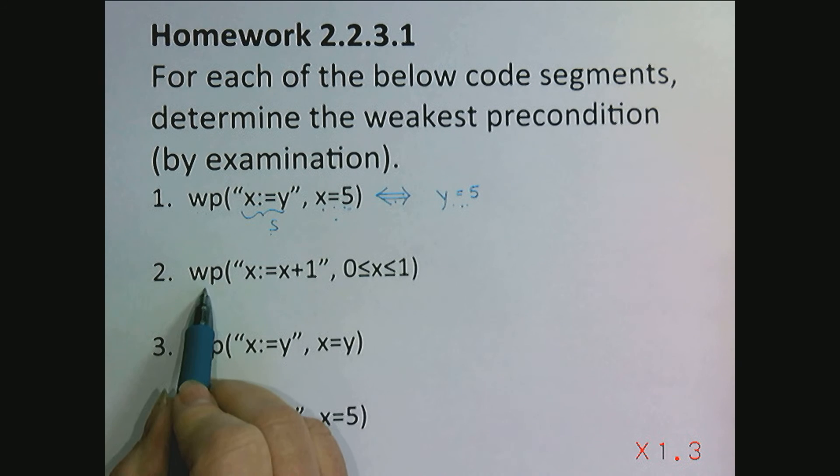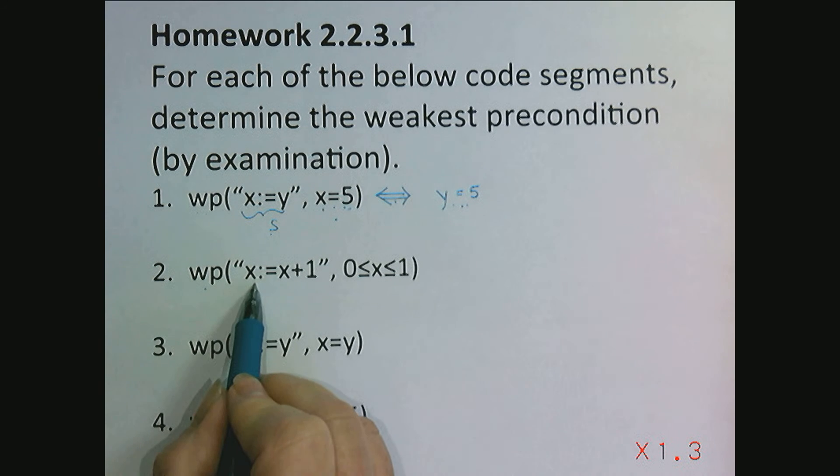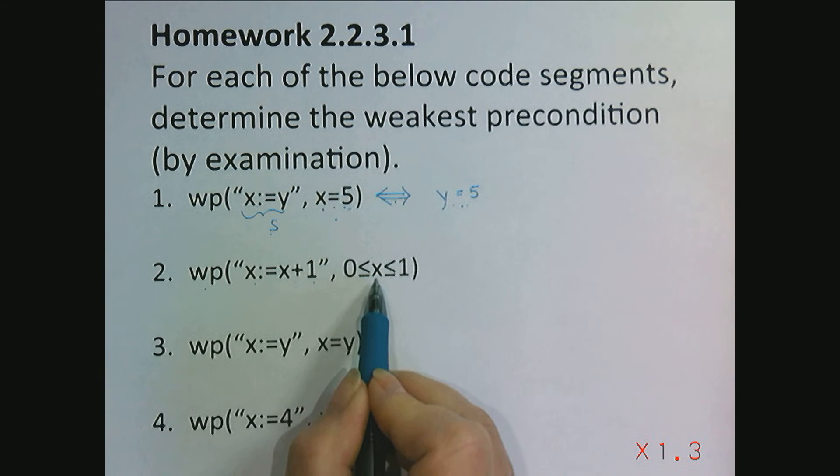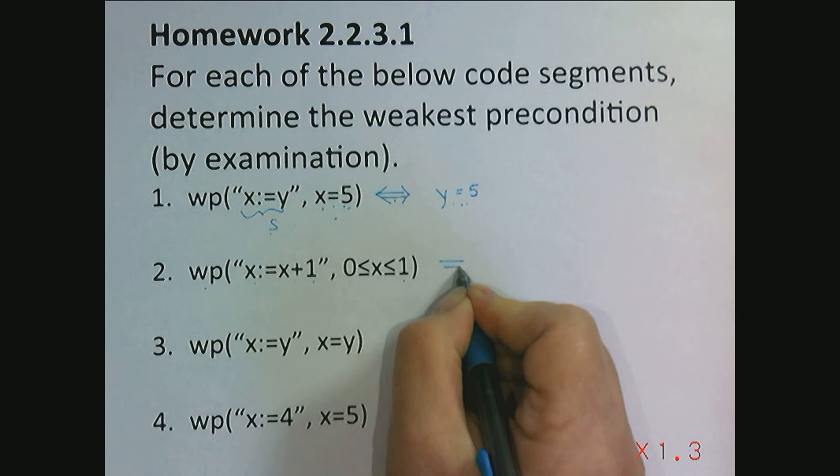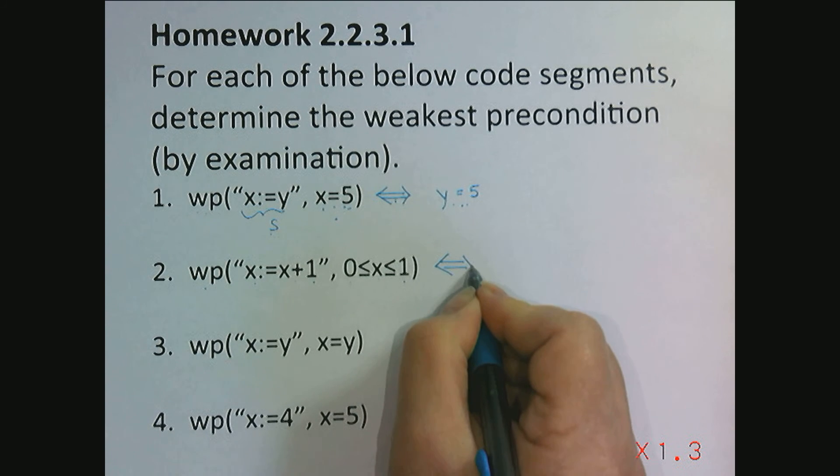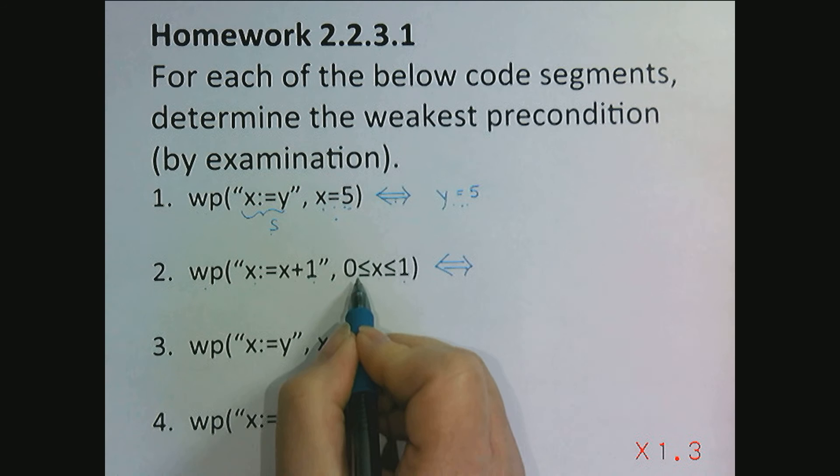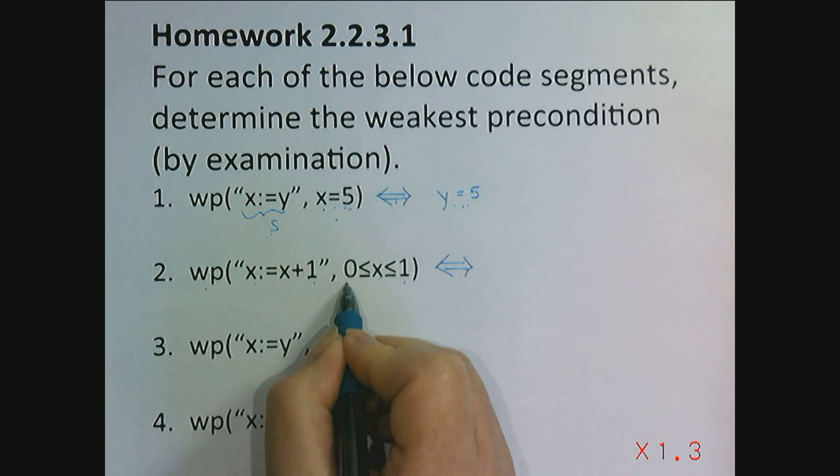So, weakest precondition of x becomes x plus 1 where we end up in a state where x is between 0 and 1. Well, let's think about it. If I add 1 and I end up with a value between 0 and 1,